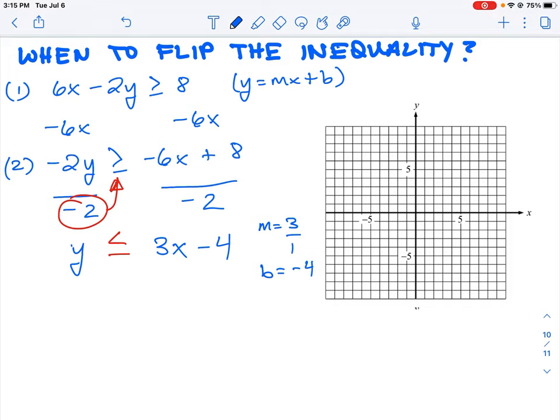So in this case, b is negative 4, so we're just going to put a dot here on the y-axis at negative 4. We're going to do our slope - up 3 over 1, up 3 over 1.